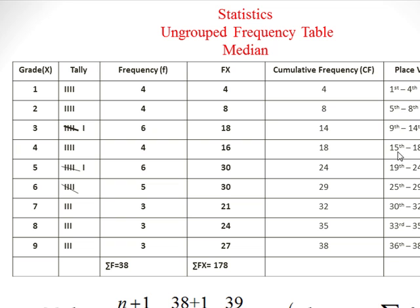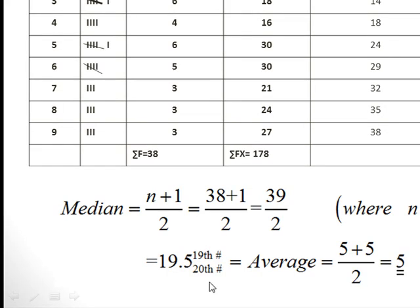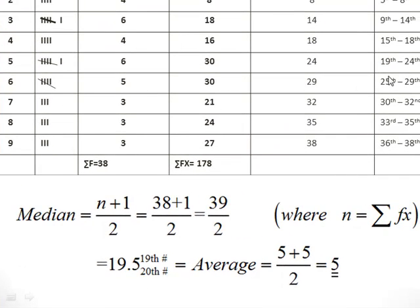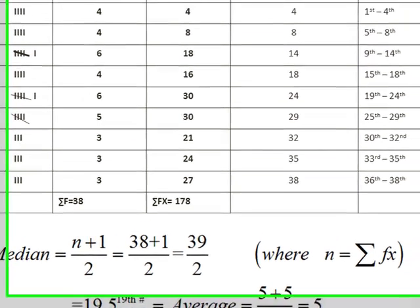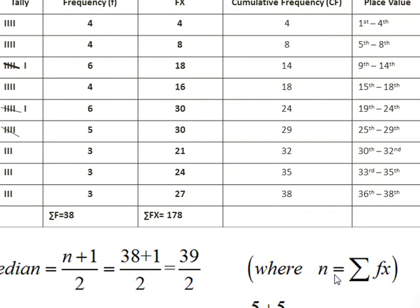Go to your place value column — the 19th position is here and it corresponds to grade 5. The 20th number is also here and it also corresponds to 5. So 5 + 5 divided by 2 equals 5. The median is 5. Note: n is the summation of f, not the summation of fx — make sure that x is not included there.